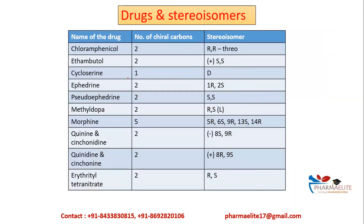We are going to talk about drugs and stereoisomers, so we have a better understanding when a question asks specifically which enantiomer is more active. In case of chloramphenicol, there are two chiral carbons both in the RR enantiomeric form. When it comes to ethambutol, which also has two stereocenters, it is the SS isomer which is active.